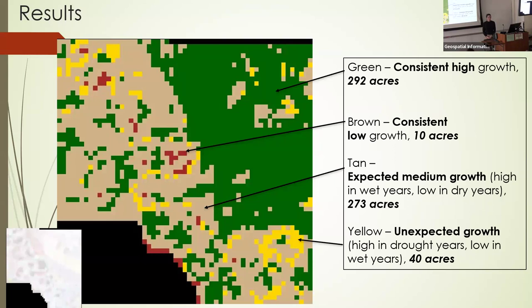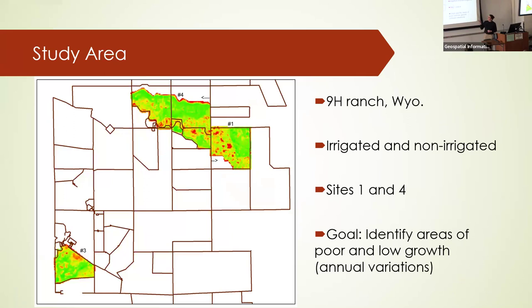A question about spatial resolution: at 30 meters — about as big as this room — there will be multiple crops within that space. How do you deal with within-pixel variation? The presenter explained that the 9-H Ranch fields mostly grow feed for their own cattle, not commodity crops. If managers did want to see specific variations, they could use a drone with a smaller spatial resolution for more detail.